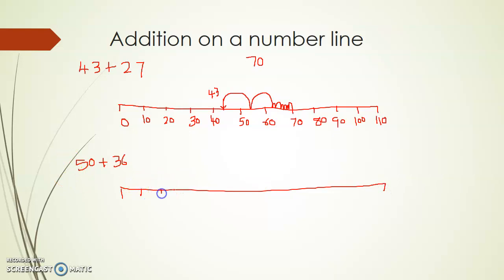So again number line: 10, 20, 30, 40, 50, 60, 70, 80, 90, 100, 110, 120. 0, 10, 20, 30, 40, 50, 60, 70, 80, 90, 100, 110, 120.